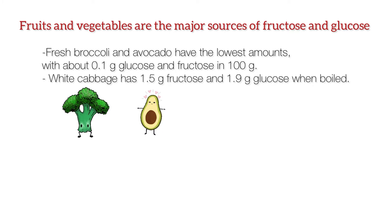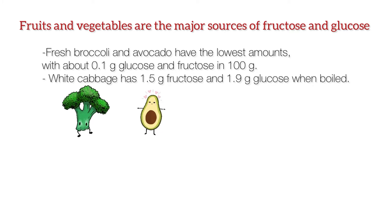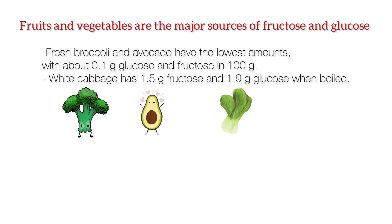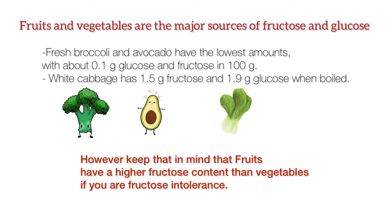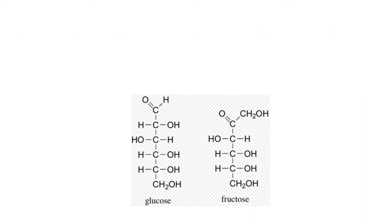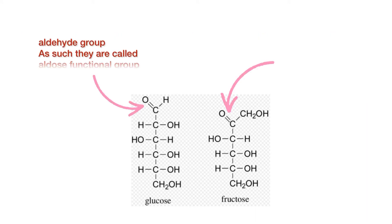Fruits and vegetables are the major sources of fructose and glucose. Fresh broccoli and avocado have the lowest amounts, with about 0.1 grams of glucose and fructose per 100 grams. White cabbage has 1.5 grams of fructose and 1.9 grams of glucose when boiled. Keep in mind that fruits have a higher fructose content than vegetables if you are fructose intolerant.